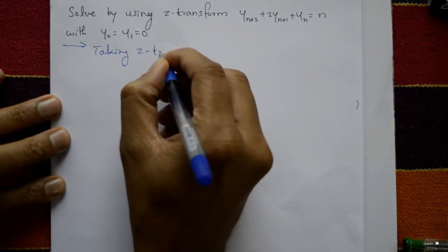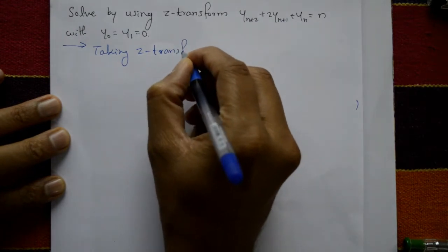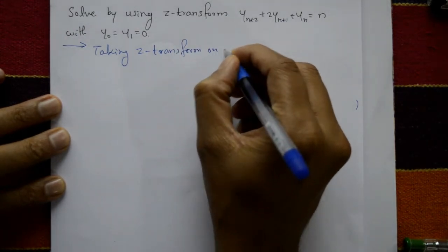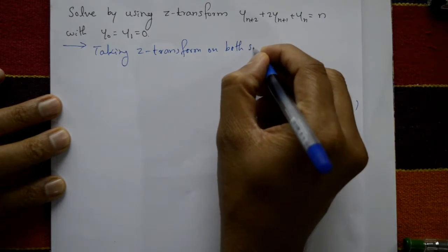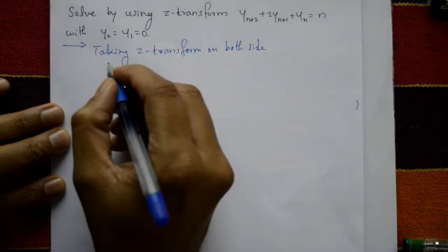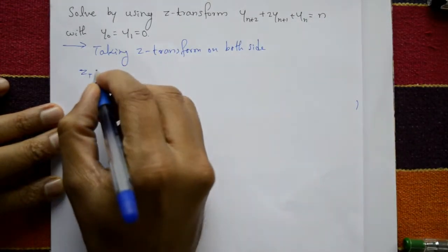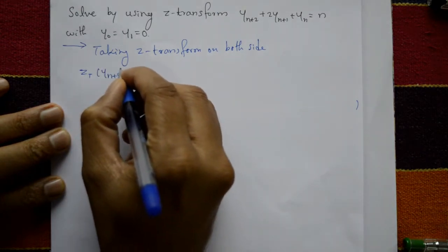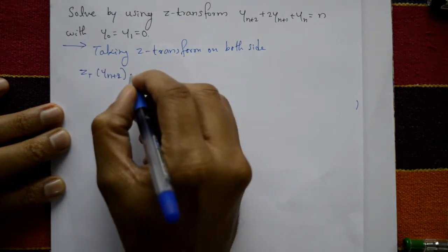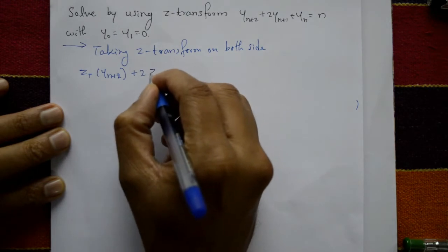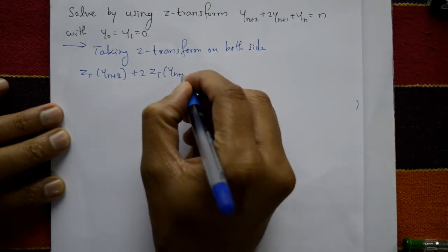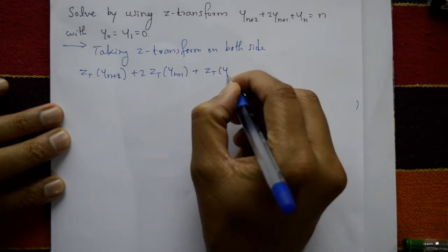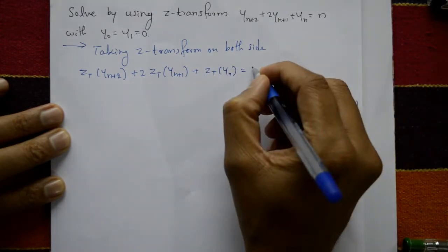Taking Z-transform on both sides: Z-transform of y(n+2) plus 2 times Z-transform of y(n+1) plus Z-transform of y(n) equals the Z-transform of the right-hand side.